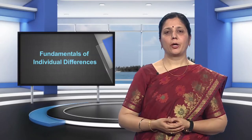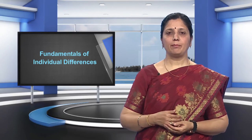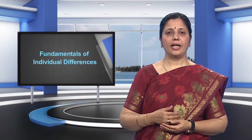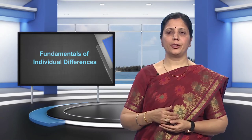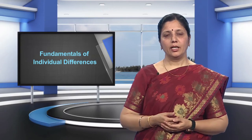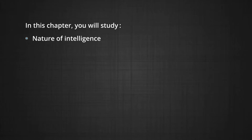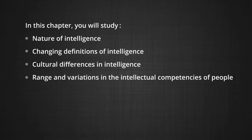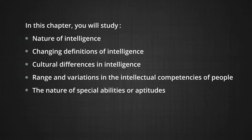This chapter will introduce you to the fundamentals of individual differences. One of the most popular psychological attributes of interest to psychologists is intelligence. People differ from each other in their ability to understand complex ideas, adapt to environment, learn from experience, engage in various forms of reasoning, and to overcome obstacles. In this chapter, you will study the nature of intelligence, changing definitions of intelligence, cultural differences in intelligence, range and variations in intellectual competencies, and the nature of special abilities or aptitudes.